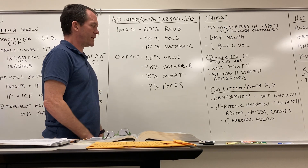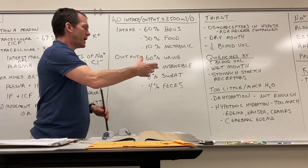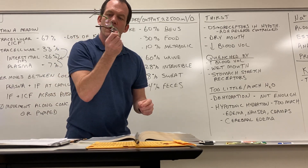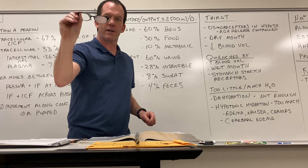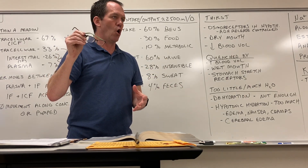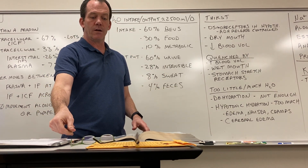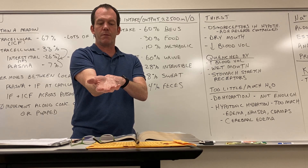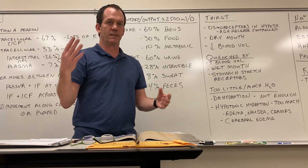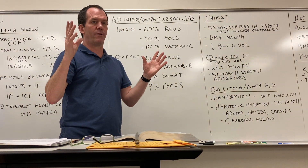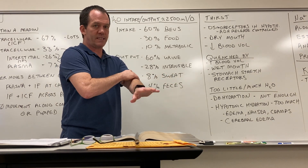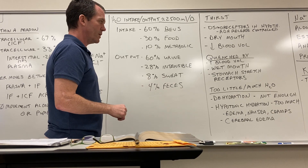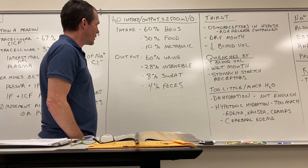For output, about 60% is urine. About 28% is insensible loss — for example, every time you breathe out, you lose water vapor, which you can see fogging up a glass lens. The cells of your skin also lose water through transmembrane evaporation — that's different from sweat, which is an intentional secretion to cool you off. About 4% of water loss is in feces, though that depends on its state.